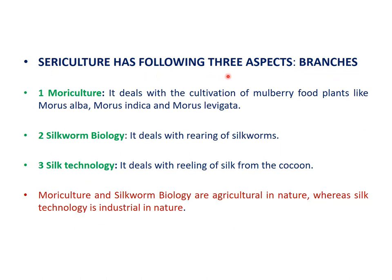Sericulture has three aspects or branches. First, Moriculture — it deals with the cultivation of mulberry food plants like Morus alba, Morus indica, and Morus levigata. Second, Silkworm Biology — it deals with the rearing of silkworms. Third, Silk Technology — it deals with the reeling of silk from the cocoon. Moriculture and silkworm biology are agricultural in nature, whereas silk technology is industrial in nature.